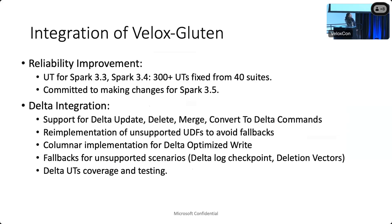We have also contributed to OSS to improve the reliability of Gluten. We added and enabled unit tests for Spark 3.3, making various fixes and changes. We did this for Spark 3.4 as well, which included fixing hundreds of UTs, and we are committed to making these changes for Spark 3.5. For Delta support, we re-implemented multiple UDF operations within Delta to prevent fallback to Spark, added columnar implementation for Delta-optimized paths, and added fallback for unsupported scenarios, with growing UT coverage.